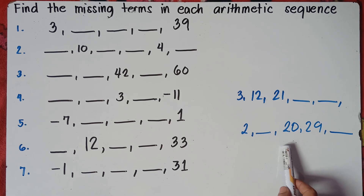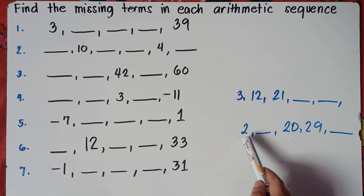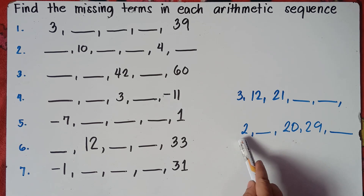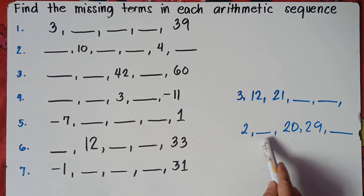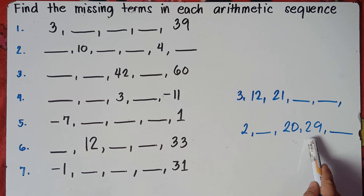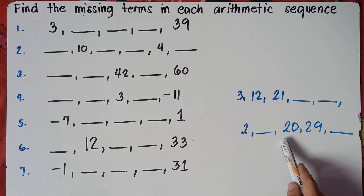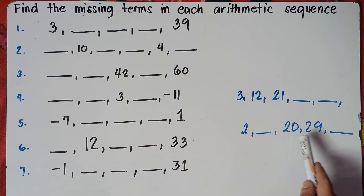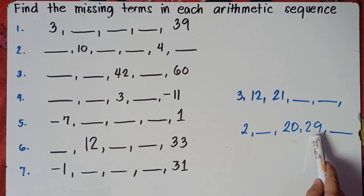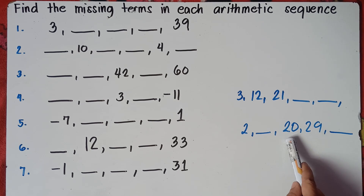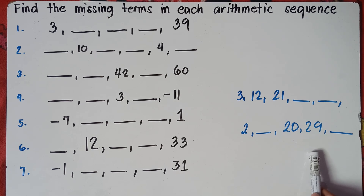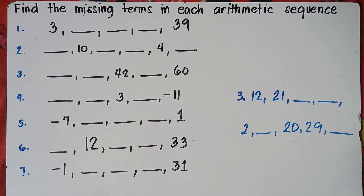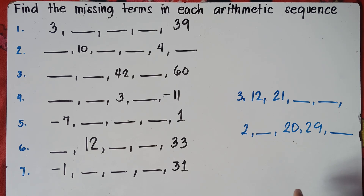For number 2 in Part 1, we have the first term, the second term is unknown, and we have the third and fourth terms. To get the common difference, subtract 29 by 20 — so 29 minus 20 — and the common difference is 9. So if the example is like this, it's easy to find the common difference.